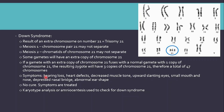Symptoms of Down syndrome include hearing loss, heart defects, decreased muscle tone, upward slanting eyes, small mouth and nose, depressed nasal bridge, and abnormal ear shape. There is no cure for Down syndrome, but symptoms can be treated — for example, heart surgery for heart defects or hearing aids for hearing loss. Down syndrome is diagnosed through karyotype analysis or amniocentesis, which can even be performed while a woman is pregnant by extracting amniotic fluid and testing for trisomy 21.